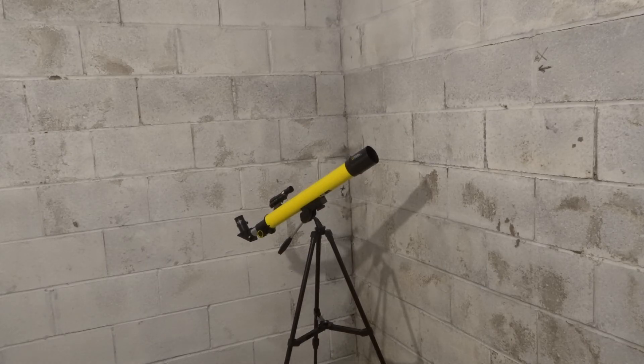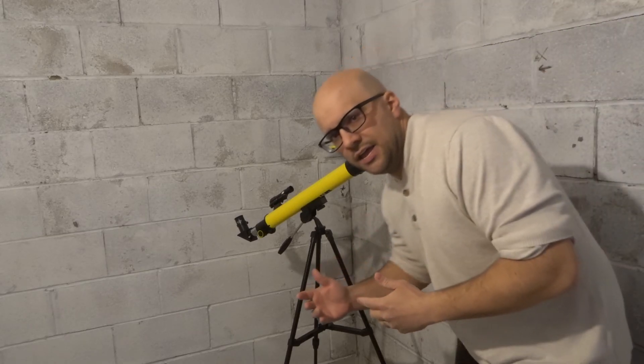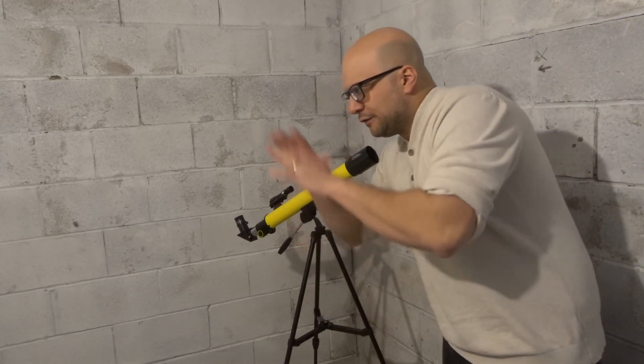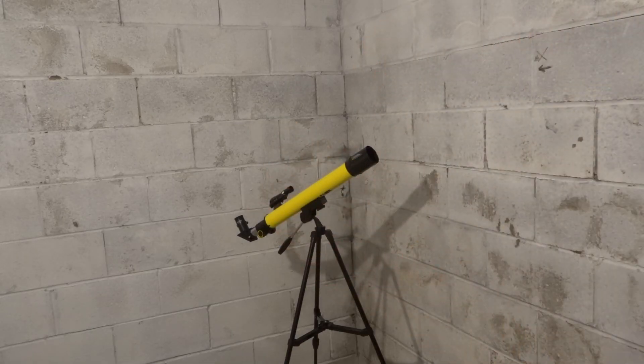Last but not least, number six is that it could just be the stuff in the sky. Essentially, sometimes when you're looking at stuff in the sky, you're going to get like fogginess almost. You might think it's your telescope, but in reality, it's just the way that the sky is on that day. Keep that in mind.